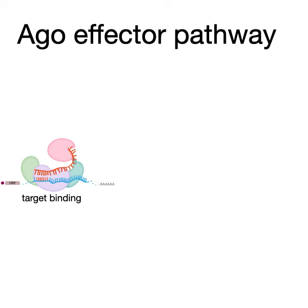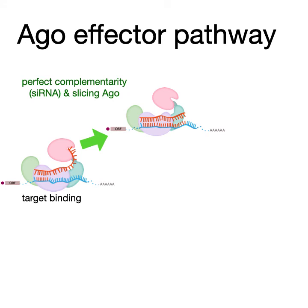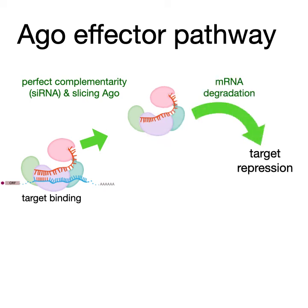What happens next depends in part on the amount of complementarity between the guide and the target, and in part on the Argonaute protein. Humans have four AGO proteins, and AGO2 is capable of slicing fully complementary targets, as you see with siRNA. This exposes raw ends of the RNA for exonucleases — RNA chewers — that find those raw ends and chew the RNA away, degrading it so no protein can get made from it.